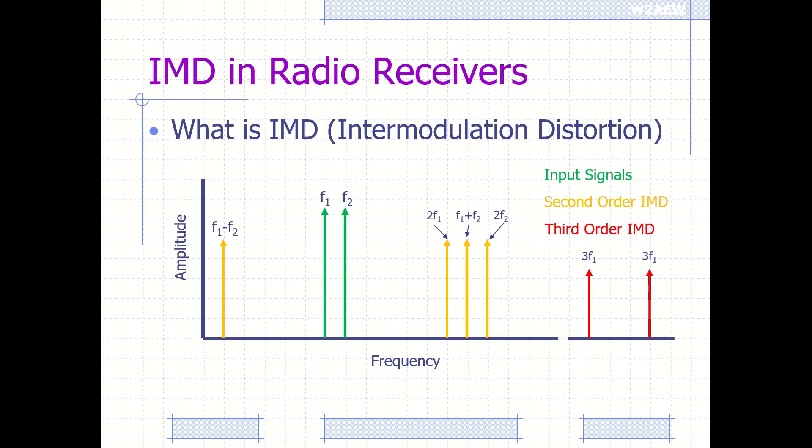The third-order intermodulation products involve three frequency terms, like 3 times F1 and 3 times F2. But the ones that really become a problem are 2 times F1 minus F2 and 2 times F2 minus F1. These signals generally lie very close to our input signals of interest and can be in-band.